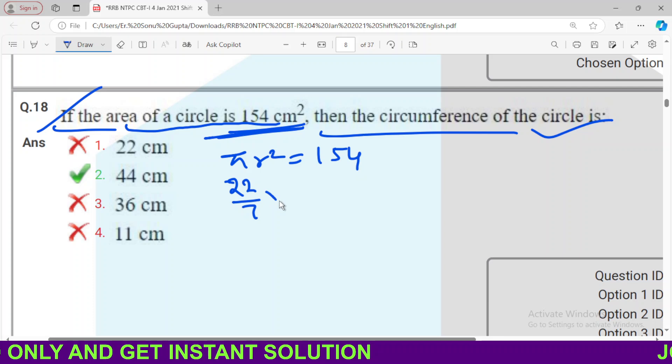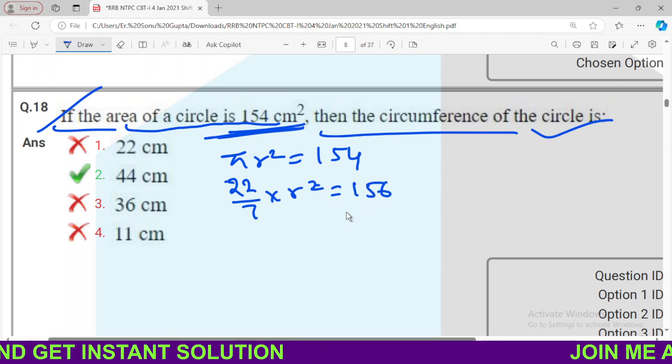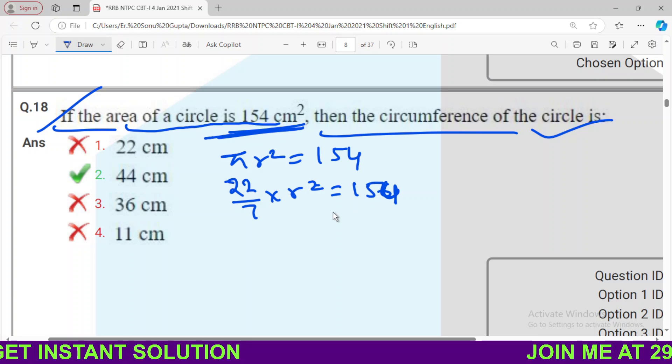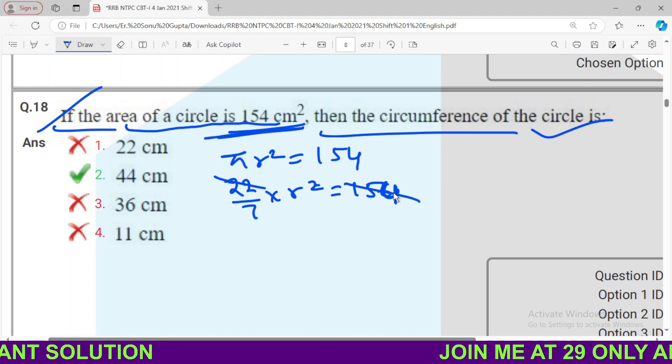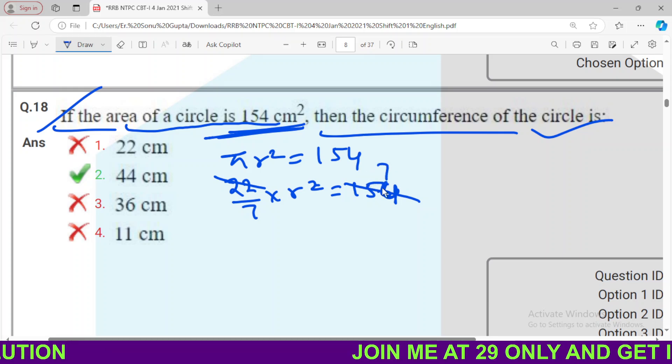22/7 R square. 114. Sorry, 154. If it will cut out or not, it will cut out. How many times it will cut out? So 7 times it will cut out and R will get 7.